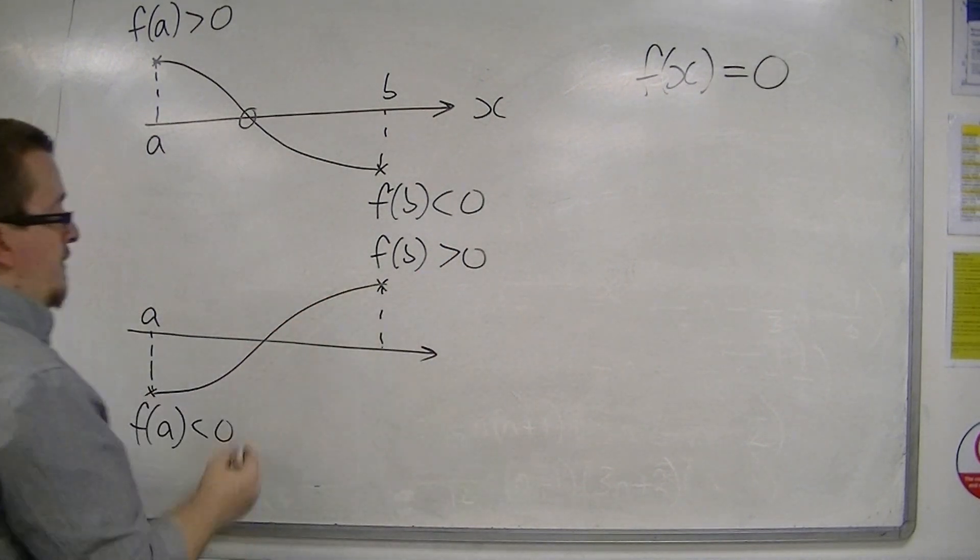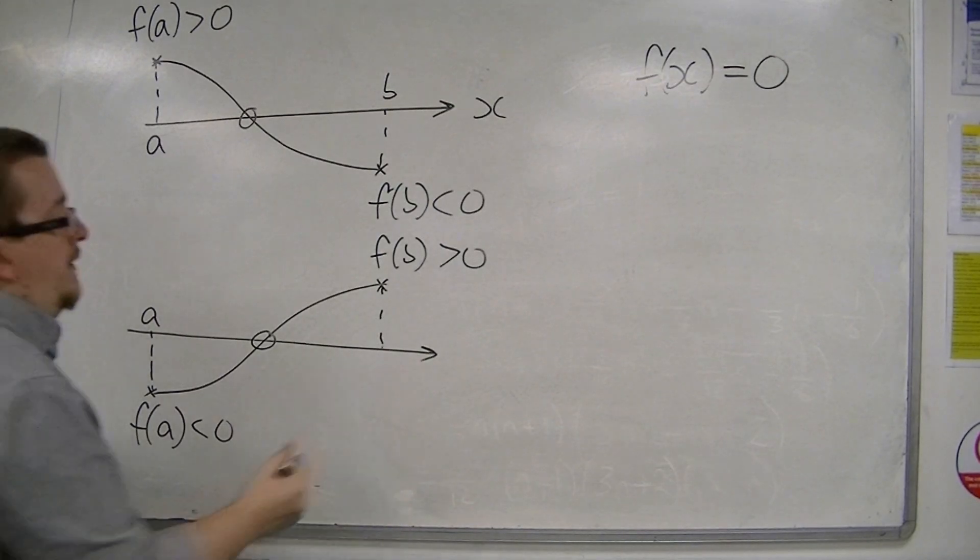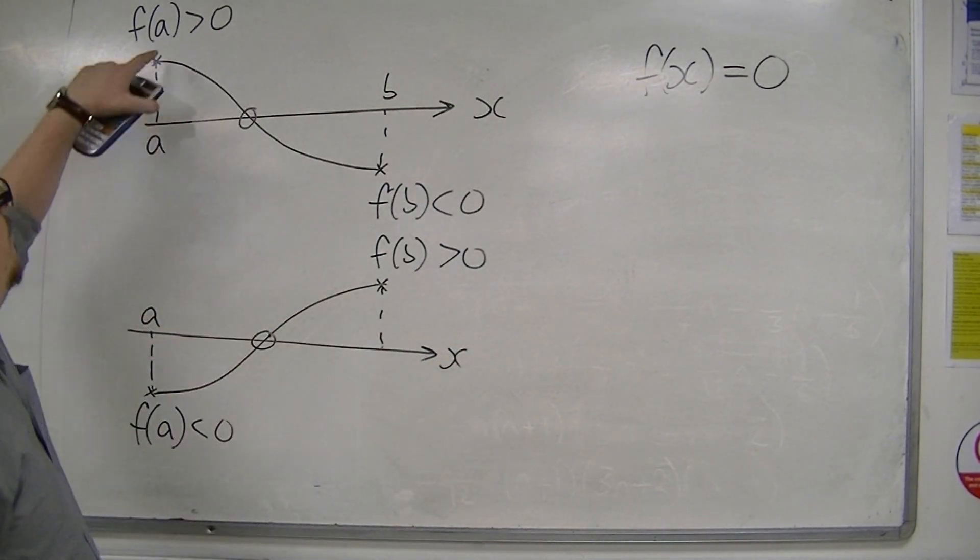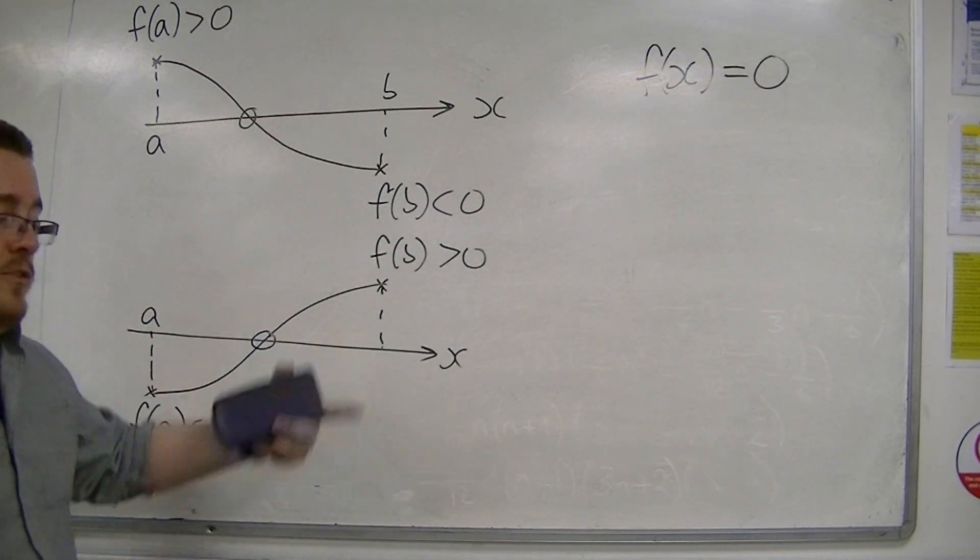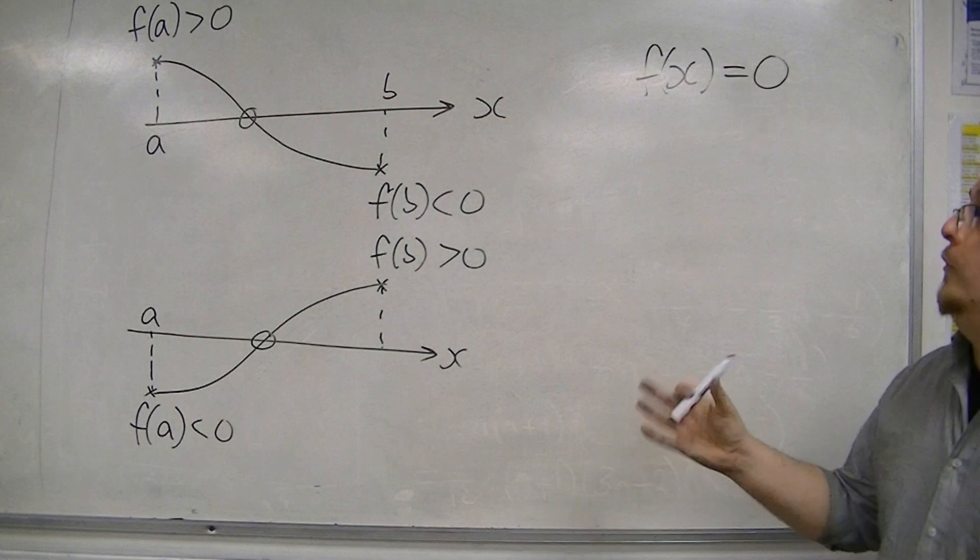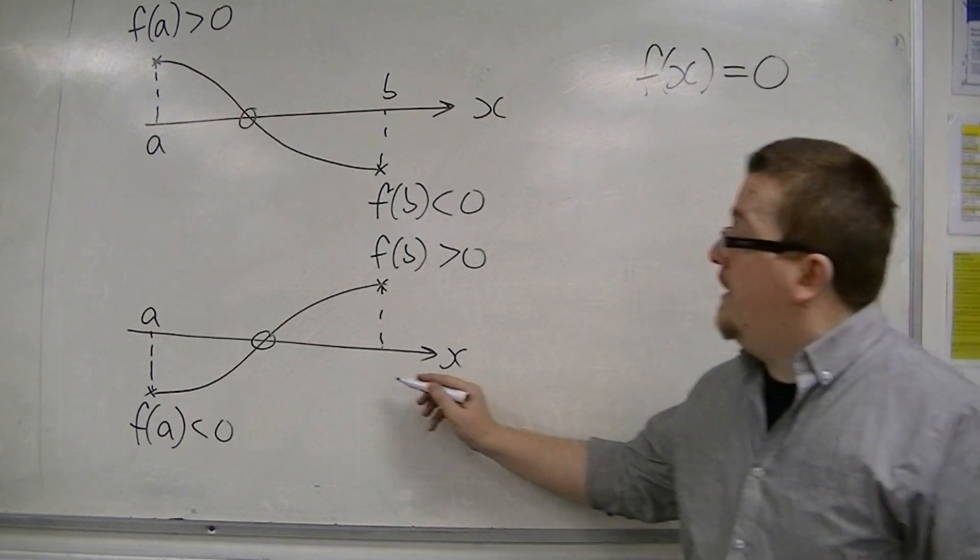Then, at some point, the curve must cross the x-axis, because we go from negative to positive. So, positive to negative, or negative to positive, both show that the solution must be between those two values, between A and B.